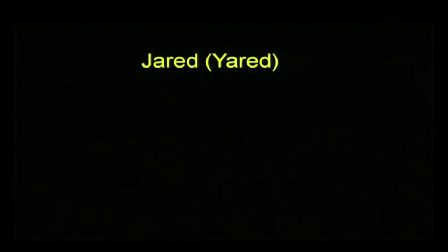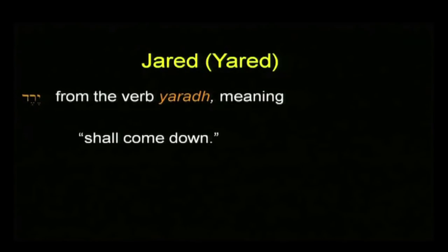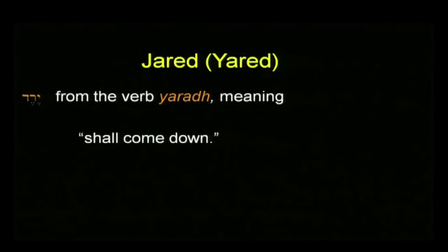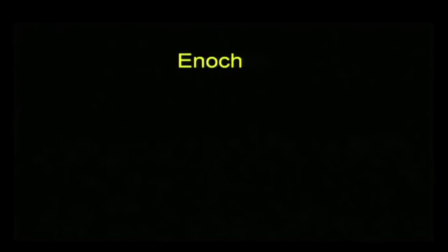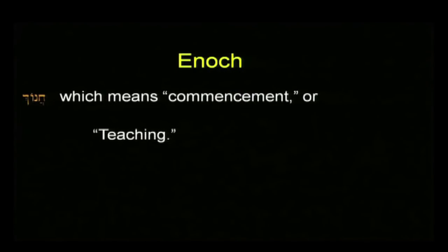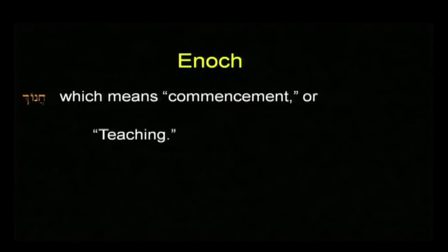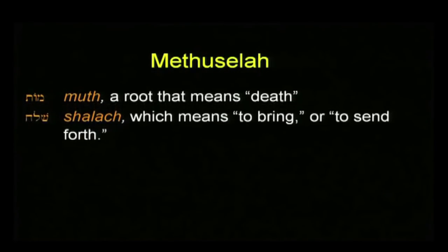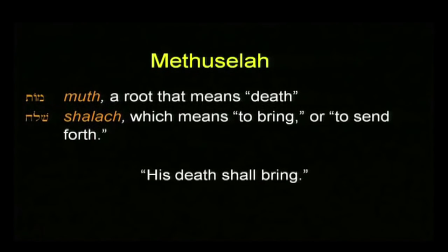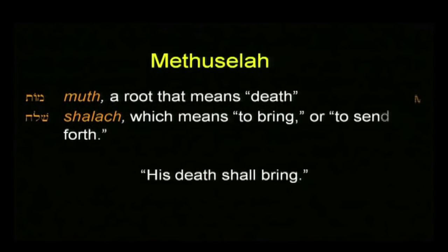His son is named Yared, which is a verb meaning to come down, and there's a whole story behind that. And he has a son by the name of Enoch — but what does the name Enoch mean? It turns out it's an academic term; it means commencement or teaching. And Enoch had a son by the name of Methuselah, and his death shall bring — and the year he died is the year the flood came.